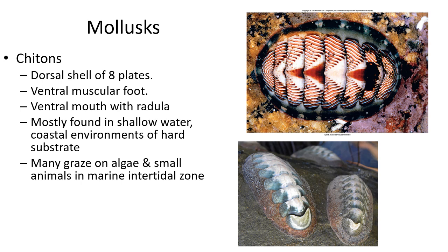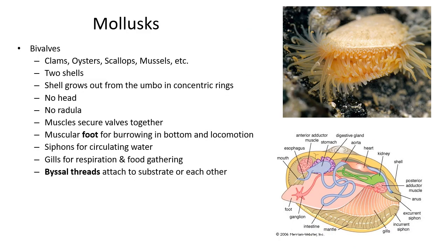Chitons have eight plates on their dorsal side and a muscular foot they use like a suction cup to stick to rocks, making them hard to peel off. They are mostly grazing mollusks.